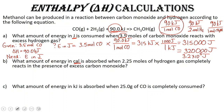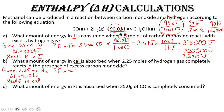The next question asks: what amount of energy in calories is absorbed when 2.25 moles of hydrogen gas completely reacts in the presence of excess carbon monoxide? We're given 2.25 moles of hydrogen gas and delta H is 90.0 kilojoules. We need energy in calories. We'll use the conversion factor of 90 kilojoules absorbed for every 2 moles of hydrogen consumed.